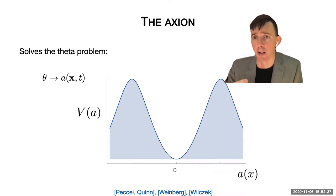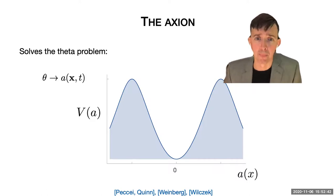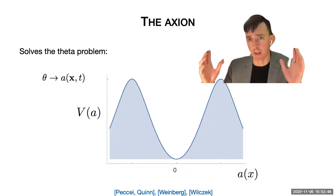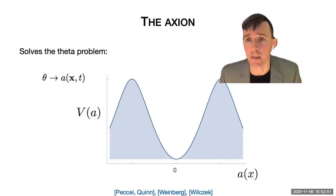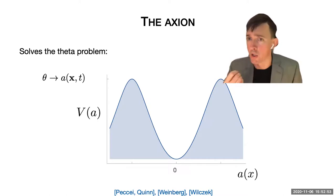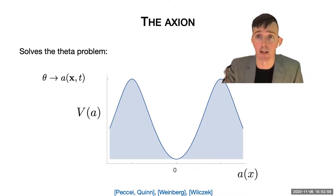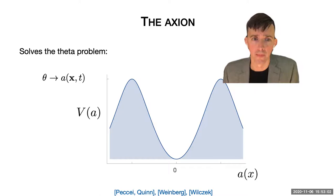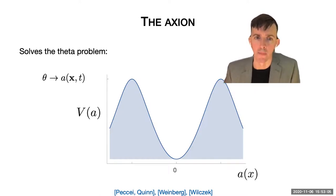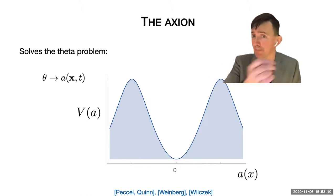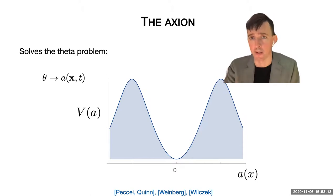It has a field with a potential energy which looks like this, and which has a minimum at zero. So the field will relax into this minimum, and we shouldn't expect to find the value of the theta angle anywhere else than at this value. In my analogy with the key card, this is equivalent to saying that I've attached my key card to a spring, which means that even if I drop it in the Pacific, it returns to my pockets and stays there.